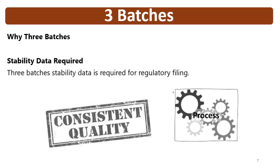The last reason is that the stability data requirement for regulatory filing is for three batches — whether it is for a generic application, a reference product, or a new application. Three batches of stability data are required. So the exhibit batches are put on stability, and three-batch stability data is provided in the application. This correlates with the number of validation batches.